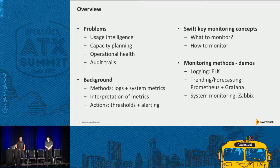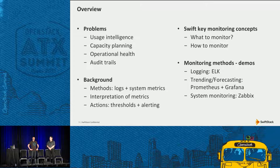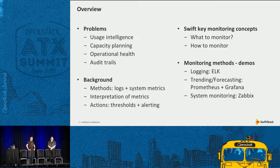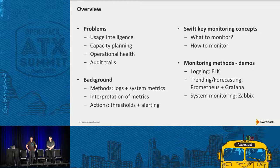Here's a little overview of what we're looking at today. The problems are really usage intelligence — what is the cluster doing, who is using it. Capacity planning — how fast is data growing, when do we need to add more. Operational health — system metrics. And audit trails — who did what, when, and maybe why. We're basically looking at logs from the Swift cluster and system metrics from each individual node.